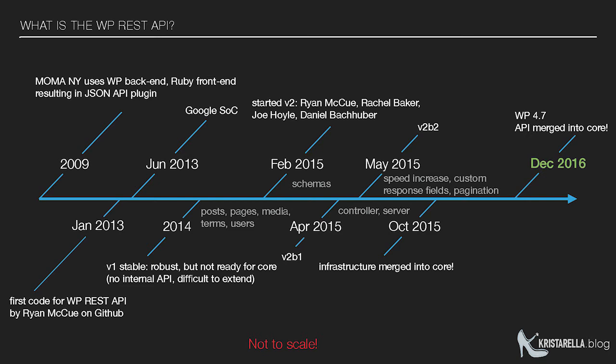A server was also added which knows about all of the endpoints that have been added. An endpoint is essentially the end part of the URL — that's how you tell it what information you want. In 2015 the infrastructure was merged into core, which meant it was getting ready to use, but there weren't actually any endpoints yet, so it still required a plugin. Development continued through 2016, and finally in December 2016, the full API was merged into core — very exciting.